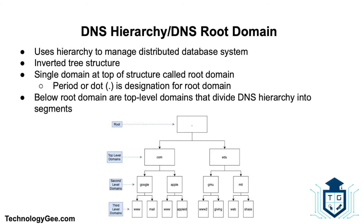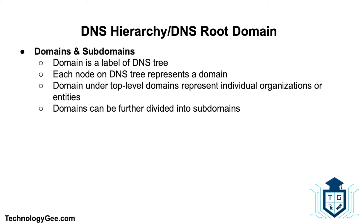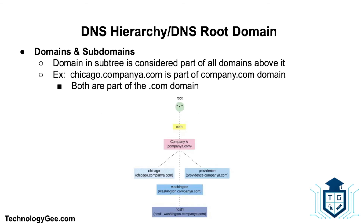DNS uses a hierarchy to manage its distributed database system. The DNS hierarchy, or domain namespace, is an inverted tree structure with a single domain at the top called the root domain, designated by a period or dot. Below the root domain are the top-level domains that divide the DNS hierarchy into segments. Each node of the DNS tree represents a domain; domains under the top-level domains represent individual organizations or entities, and can be further divided into subdomains. For example, chicago.companya.com is part of the companya.com domain, and both are part of the .com domain.